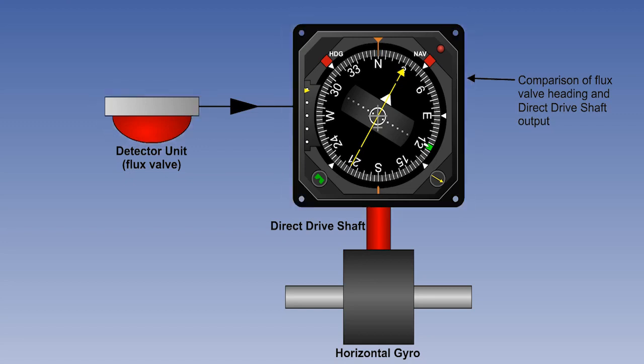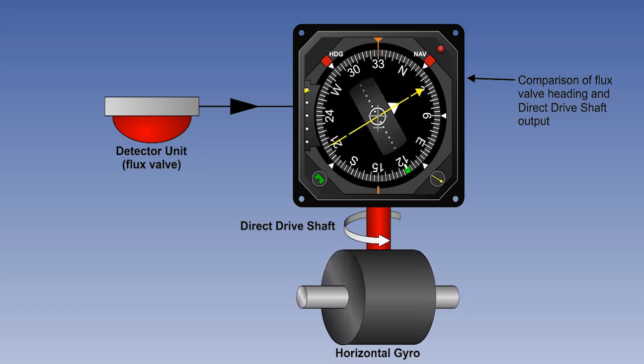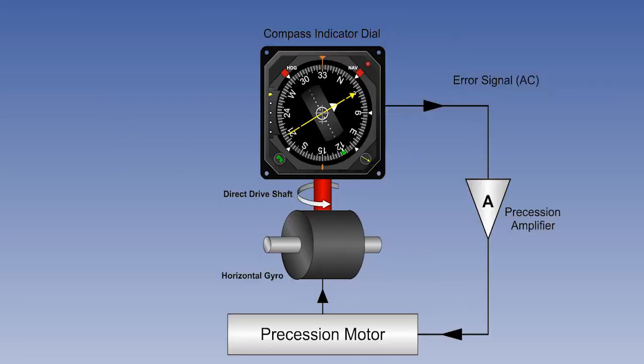We'll assume a steady heading, which gives a steady input from the flux valve. From this point, any difference between the flux valve field and the gyro alignment would only arise if the gyro were to drift. If this happens, the drive shaft will not be in alignment with the flux valve field, and an AC error signal is generated and passed to the precession amplifier, where it is amplified, phase detected, and rectified to direct current, or DC.